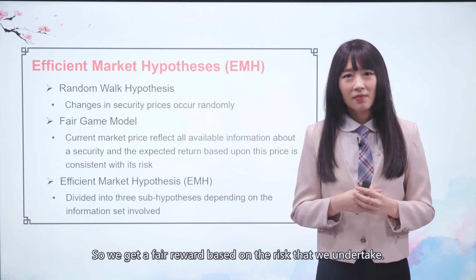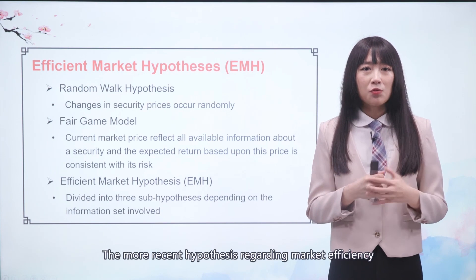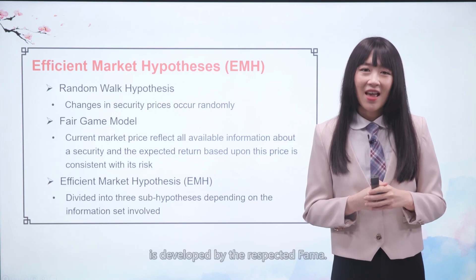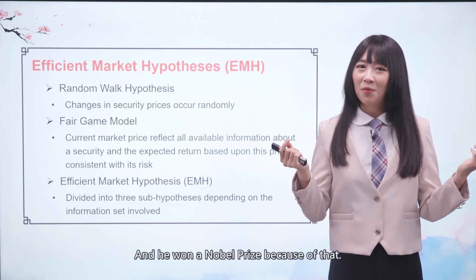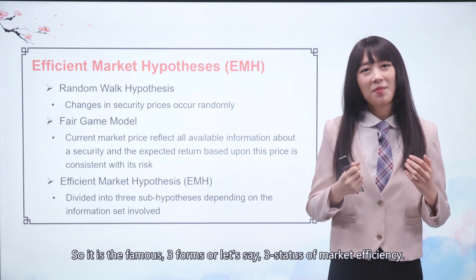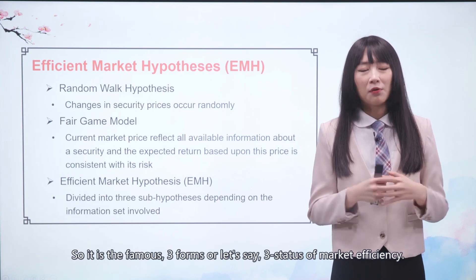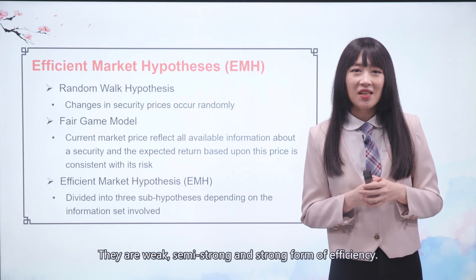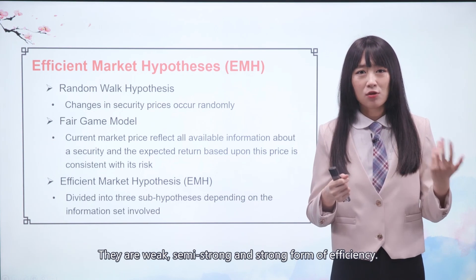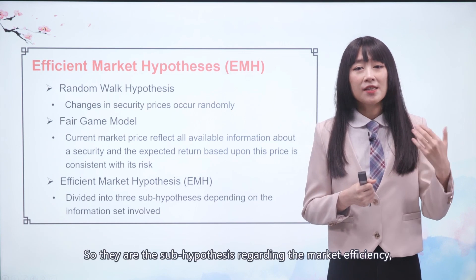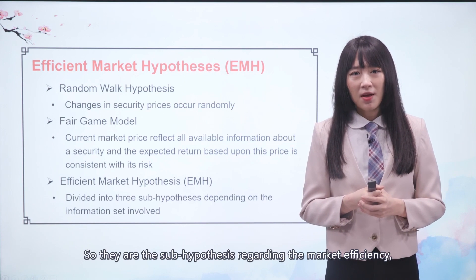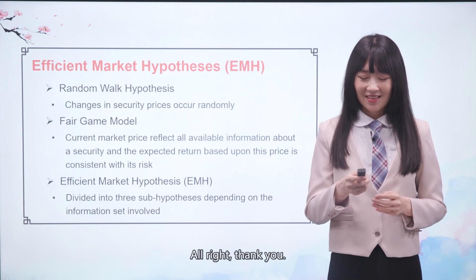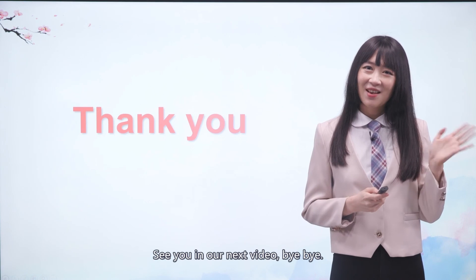The more recent hypothesis regarding market efficiency was developed by the respected Fama, who won a Nobel Prize because of that. It is the famous three forms, or three statuses, of market efficiency: weak, semi-strong, and strong form of efficiency. These are the sub-hypotheses regarding market efficiency, which will be the content of our next session. Thank you, see you in our next video.